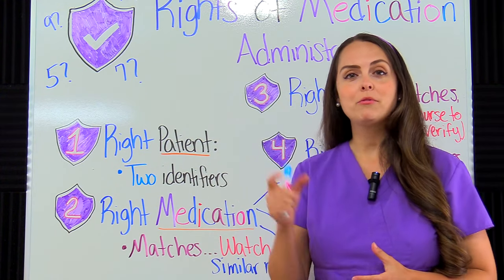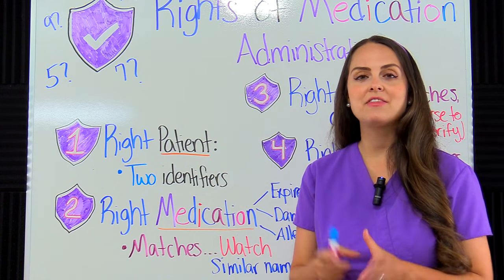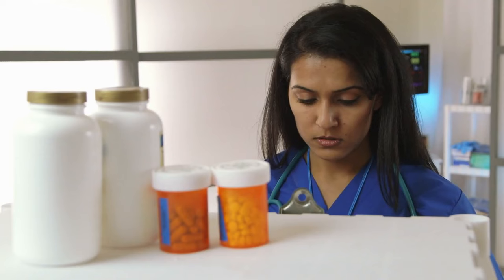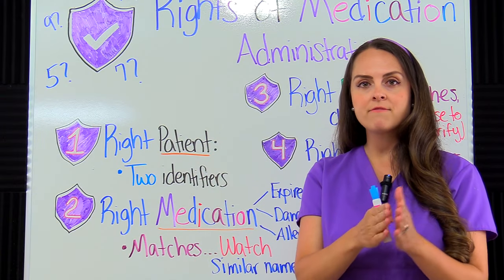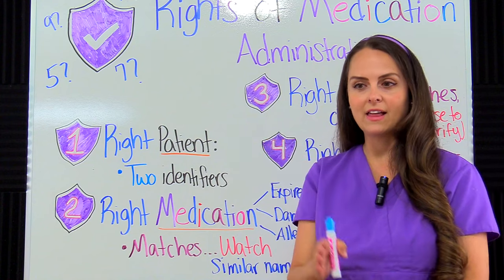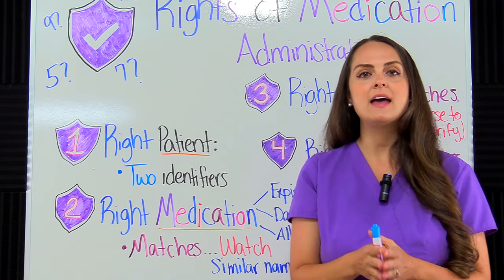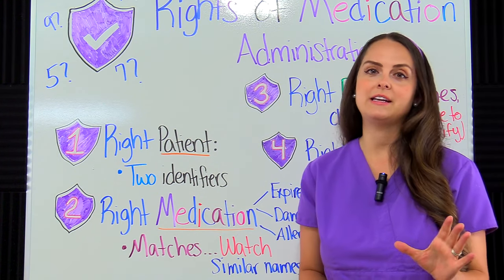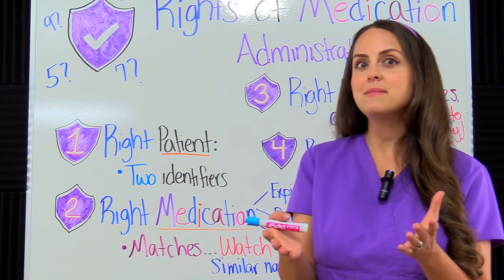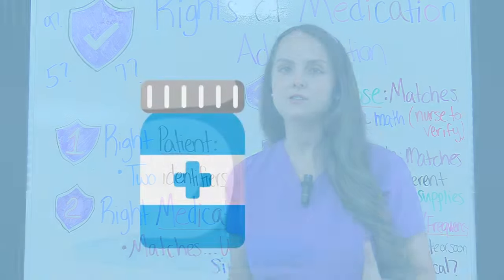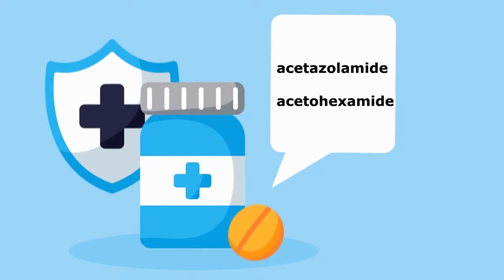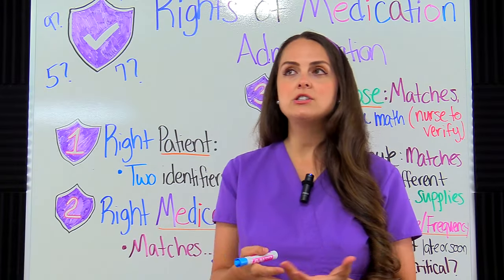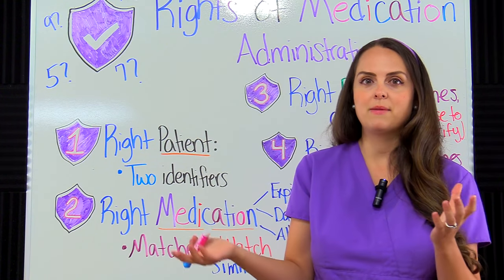The second right is right medication. Whenever performing your safety checks, look at the order and pay close attention to the medication name that was ordered, then compare that to what you have on hand. Look at that name from beginning to end very carefully, because there are medications with very similar-looking names. For instance, look at these two drug names: acetazolamide, which is a diuretic, and acetohexamide, which helps treat diabetes and lower blood glucose. If you just quickly glance, you may miss the difference.